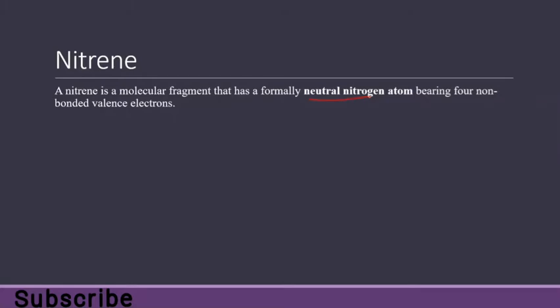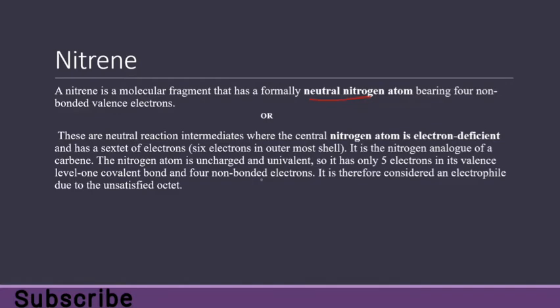NH3 has five electrons. But from the definition, a nitrine has a neutral nitrogen atom bearing four non-bonded valence electrons, so we must have one atom attached to the nitrogen. These are neutral reaction intermediates where the central nitrogen atom is electron deficient and has a sextet of electrons — six electrons in the outermost shell. The nitrogen atom is uncharged and univalent, with only one covalent bond and four non-bonded electrons.